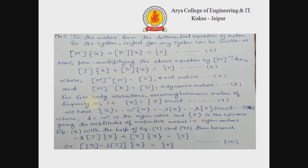For free vibration, assuming harmonic motion of frequency ω — that is, x = X sin(ωt) as shown in equation nine — we have ẍ = -ω²x = -λx, where λ = ω² is the eigenvalue and X is the column matrix giving the amplitudes of the respective masses, which is the eigenvector. Substituting into equation six gives the form shown in equation ten.